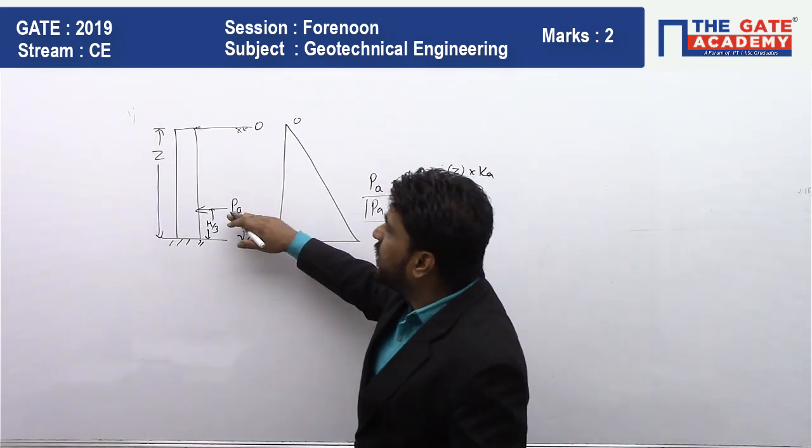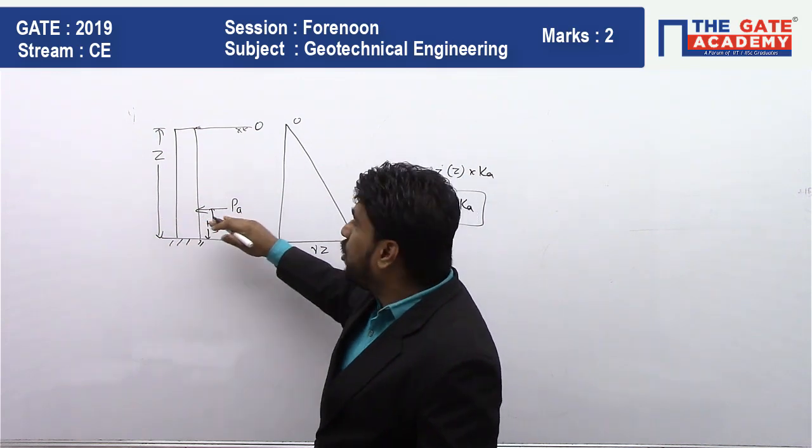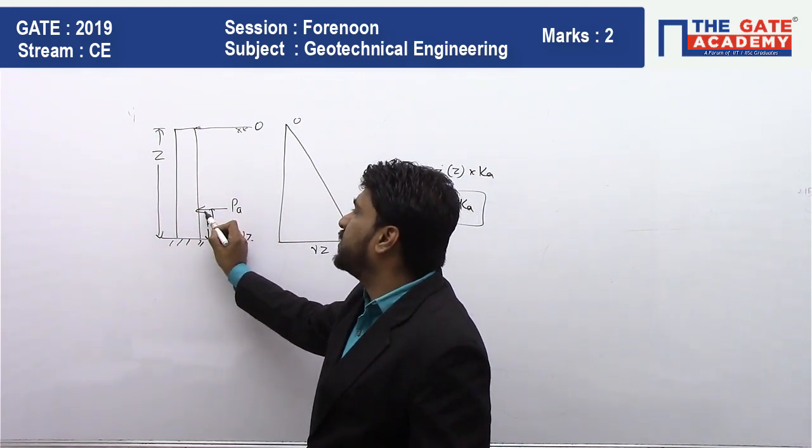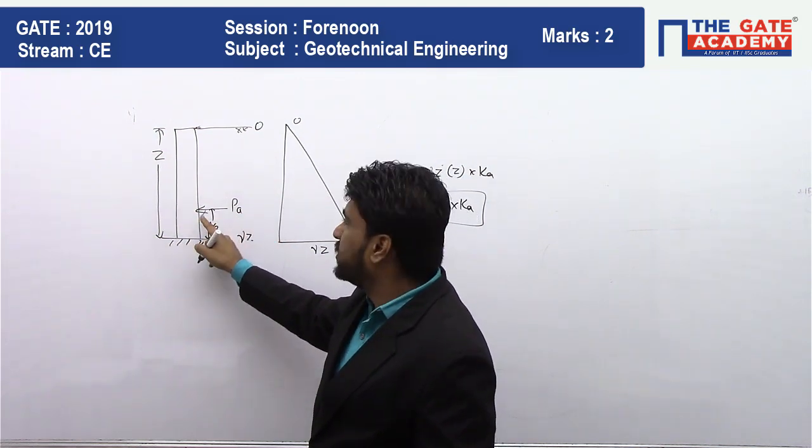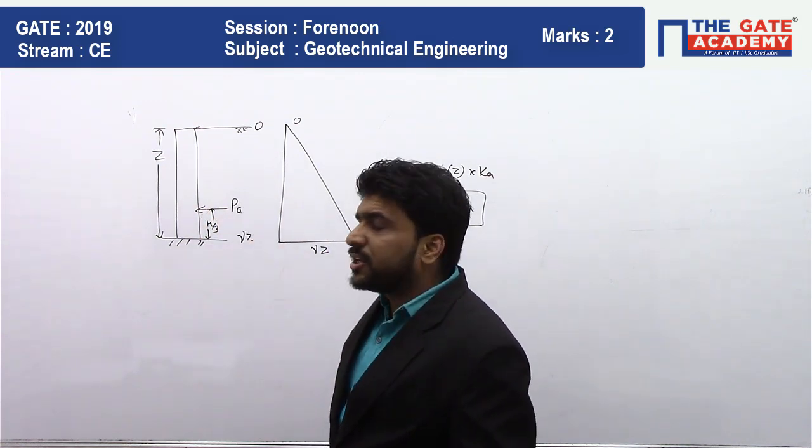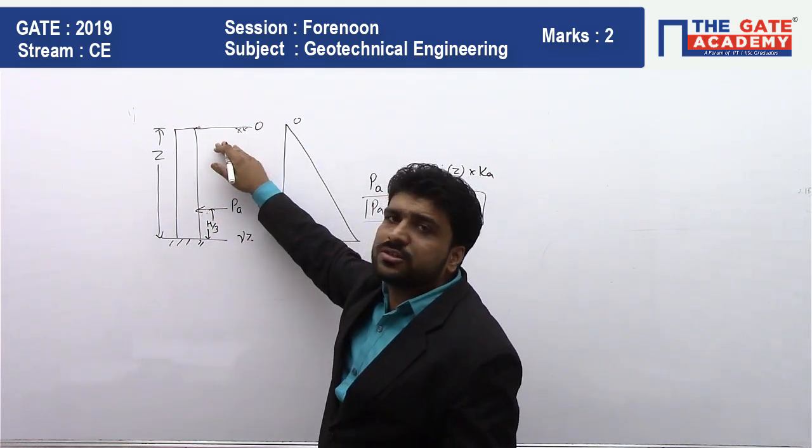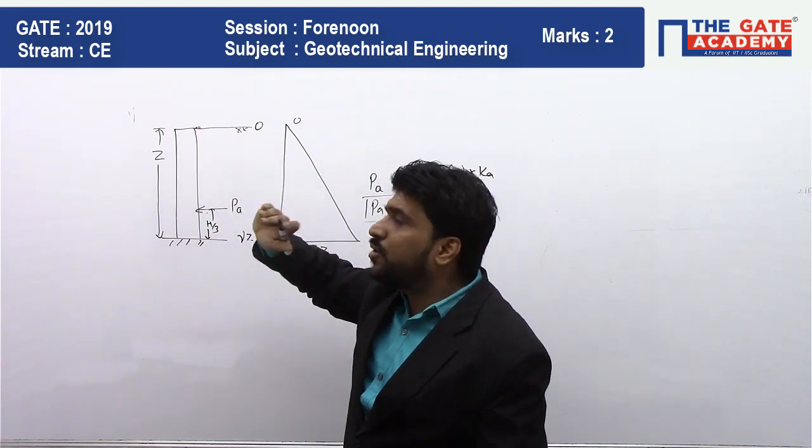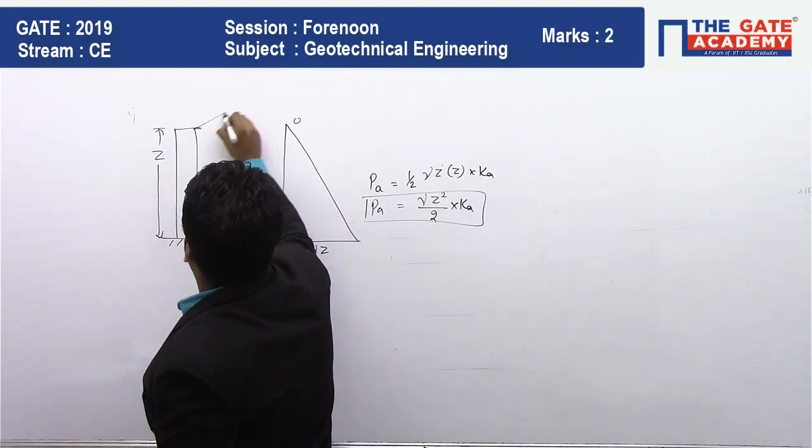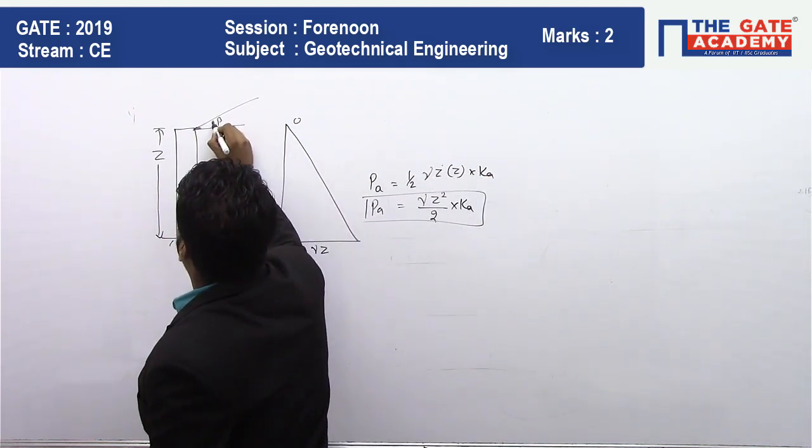Now you tell me, just think about it. The angle of this P with the horizontal is what? The angle of this Pa with the horizontal is zero. Why is it zero? Because your surcharge is also at a zero angle.